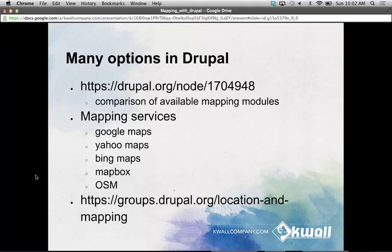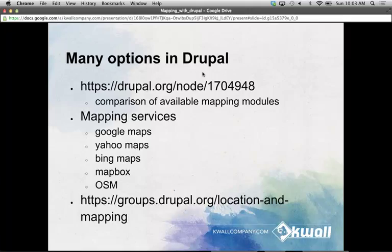There are a lot of different contributed modules in Drupal that deal with mapping and producing maps. For a good rundown of the most popular ones and a comparison of their different features, use this link up here — there's a whole discussion on different mapping modules. These mapping modules leverage some external services to actually generate the maps. Common ones are the Google Maps API, Yahoo and Bing Maps. OpenLayers by default uses OpenStreetMaps, but there are modules that extend its functionality to provide integration with Mapbox and other map services. There's also an entire Drupal user group dedicated just to location and mapping.